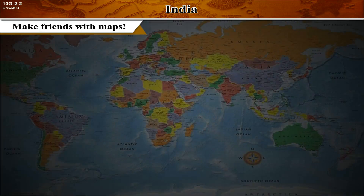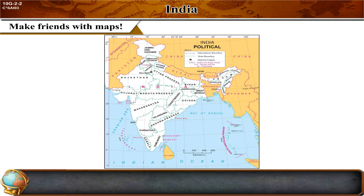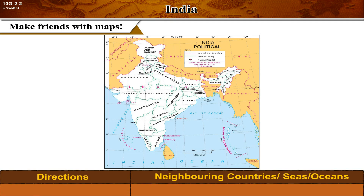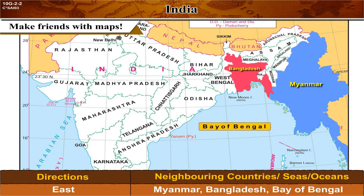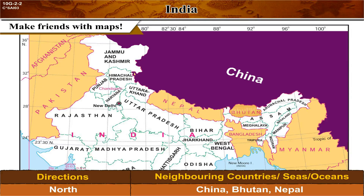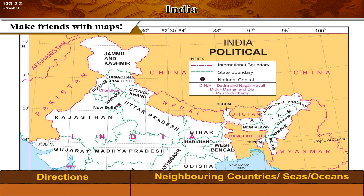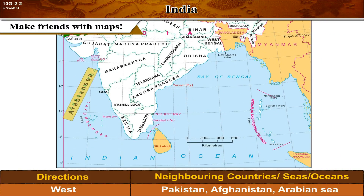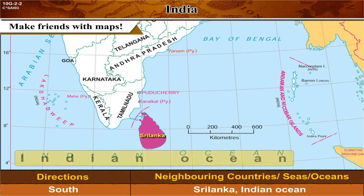Make friends with maps: observe the figure, identify the countries and water bodies around India, and complete the table in your notebook. East neighboring countries: Myanmar, Bangladesh; sea and ocean: Bay of Bengal. North: China, Bhutan, Nepal. West: Pakistan, Afghanistan; Arabian Sea. South: Sri Lanka; Indian Ocean.